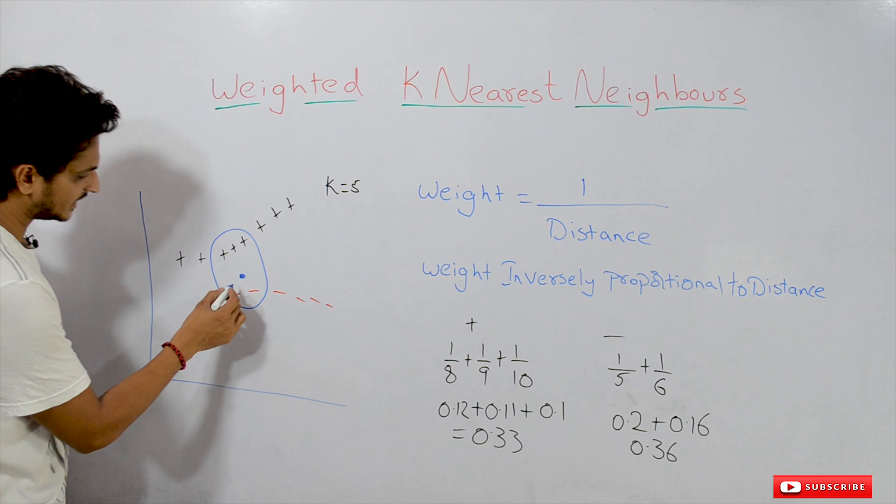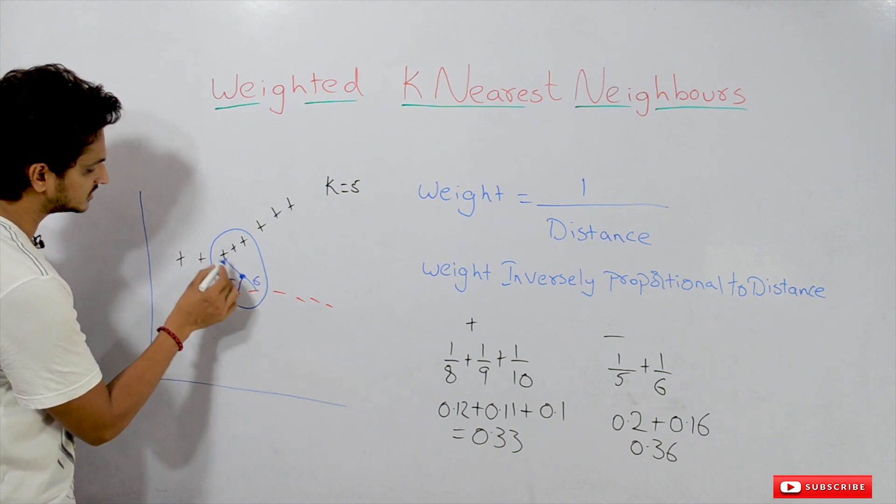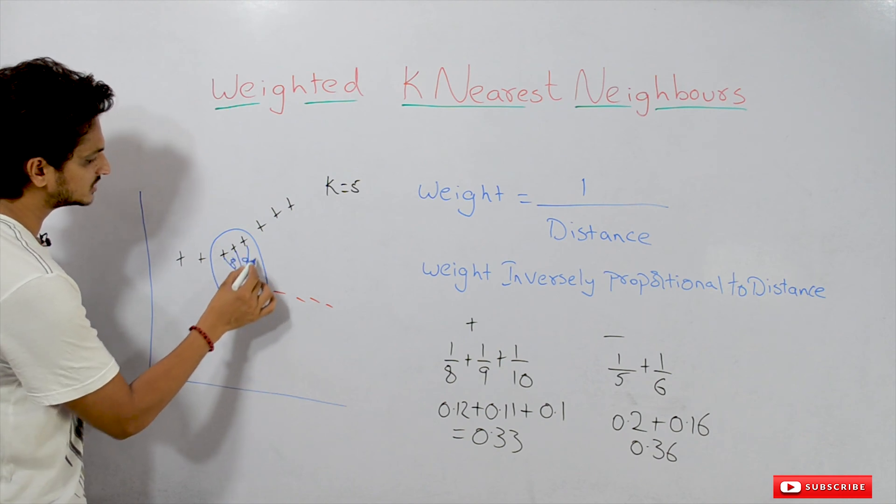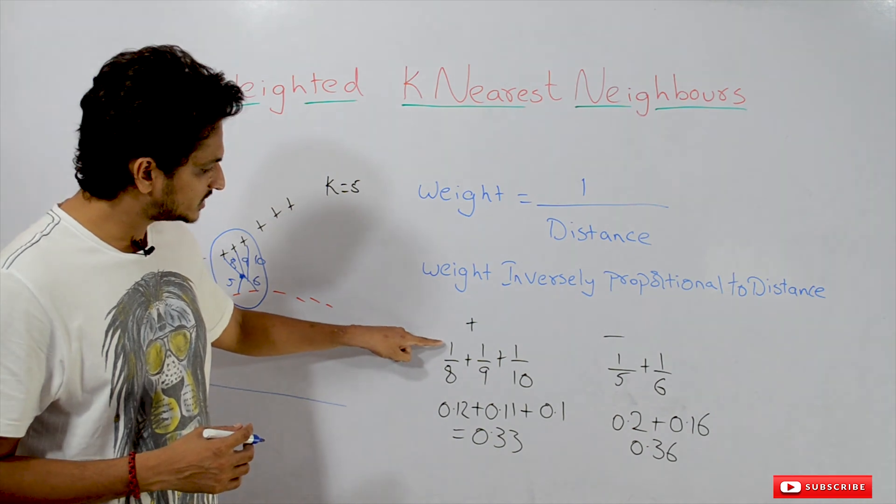Let's take an example. This distance is 5, this distance is 6, this distance is 8, this distance is 9, this distance is 10. So we are calculating weights for each and every point.